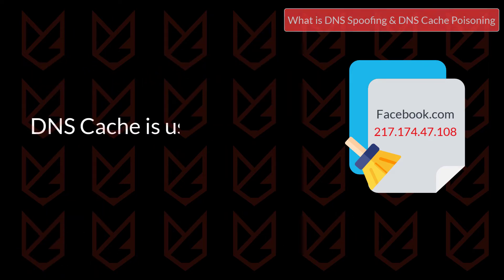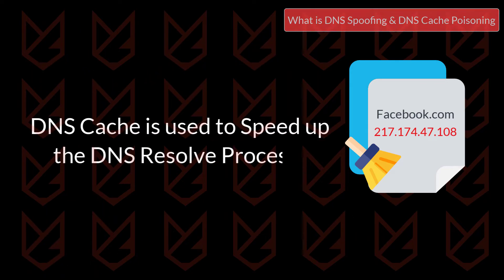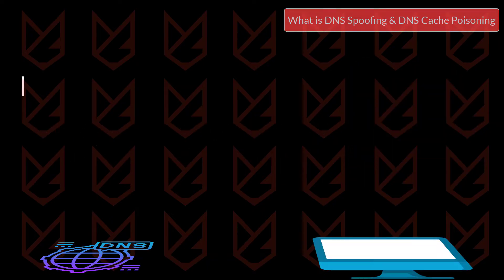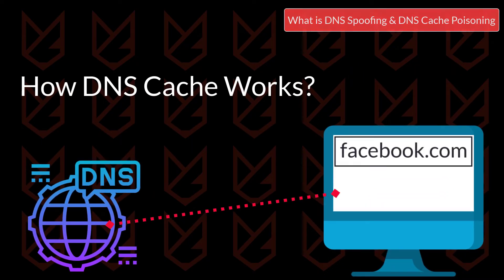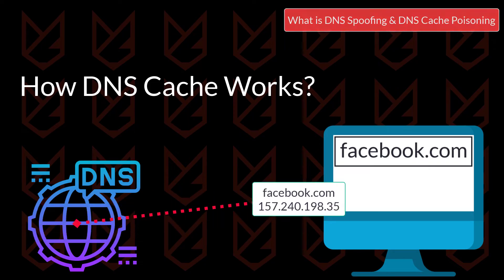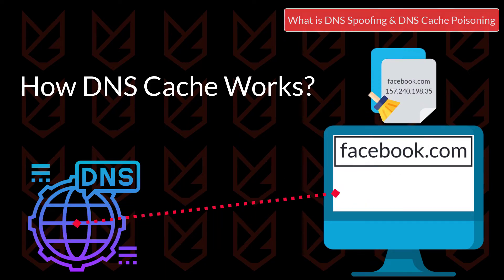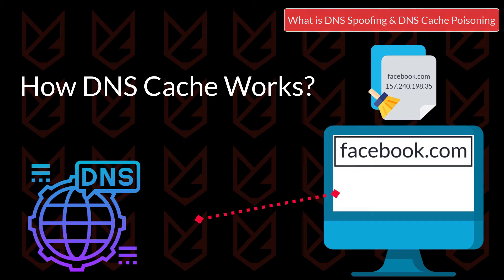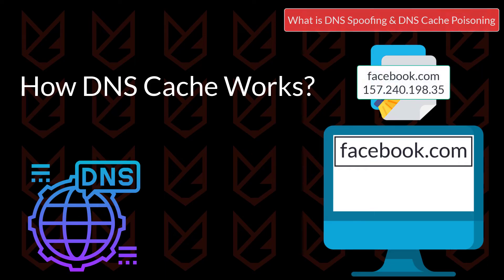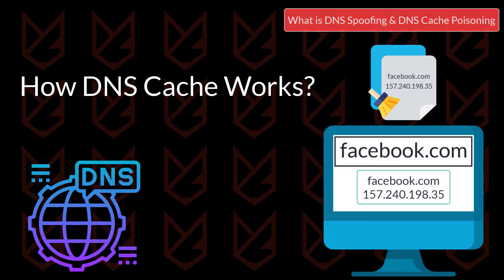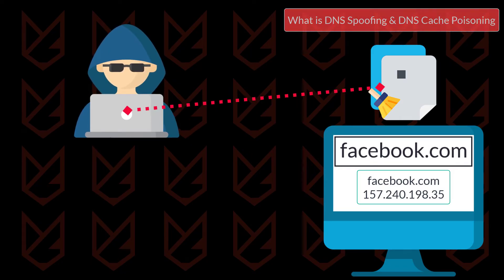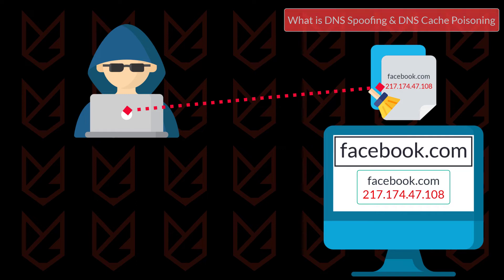The DNS cache is used to speed up the DNS resolution process. When you open a website, its IP address is resolved from the DNS server and then stored as a DNS cache so that you don't have to contact the DNS server again. Next time you try to open the same website, the DNS cache stored on your computer quickly resolves the IP address, speeding up the whole process. Hackers poison this cache by replacing the IP address so you are directed to their malicious site instead of the actual site.